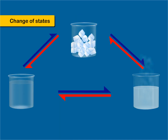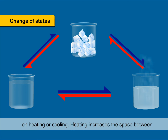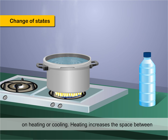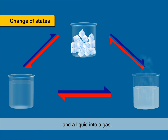Change of States: Matter can change from one state to another. They are interchangeable. The three states of matter change on heating or cooling. Heating increases the space between the molecules. Thus, on heating, a solid changes into a liquid and a liquid into a gas.